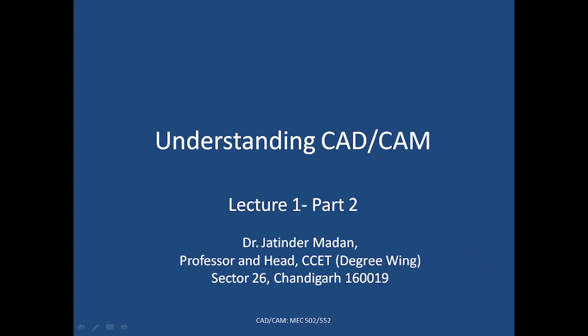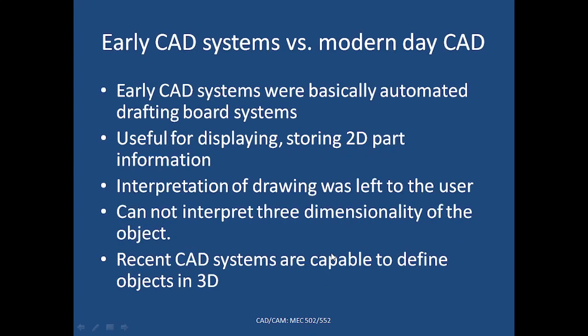In the last lecture, we discussed about the evolution of CAD and came to know that a CAD model is a better way of communication because it represents three-dimensional information of the part or product. Here, we will discuss the difference between CAD systems that evolved in the earlier time, like in the 1960s, 70s, and 80s, and modern day CAD systems.